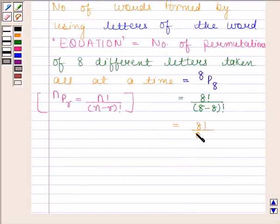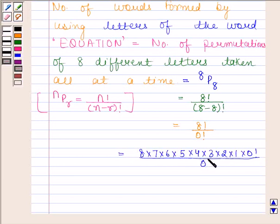And this is equal to 8 factorial upon 0 factorial. 8 factorial is equal to 8 into 7 into 6 into 5 into 4 into 3 into 2 into 1 upon 0 factorial. So, we can cancel 0 factorial from both numerator and denominator.